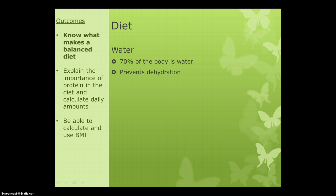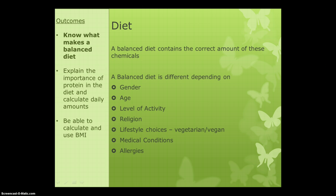The final thing is water. 70% of our body is water, and we consume it to prevent ourselves from becoming dehydrated. We will talk more about dehydration in another topic. A balanced diet is something that contains the correct amount of all these chemicals — the right amount of carbohydrates, fats, and proteins. If you have those, then we would say the diet is balanced.